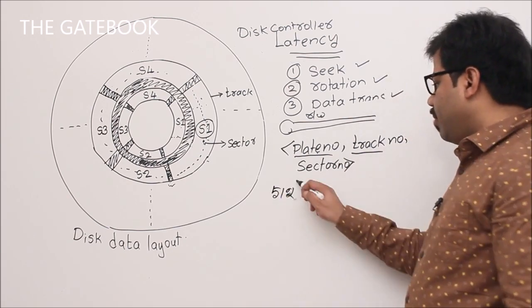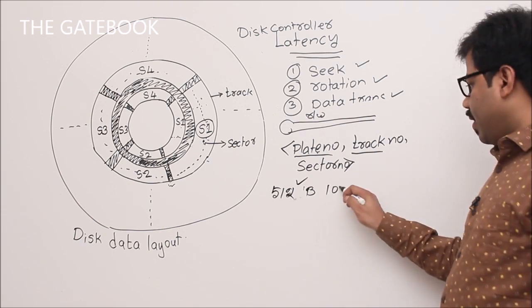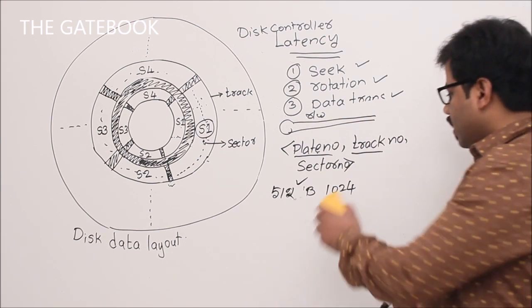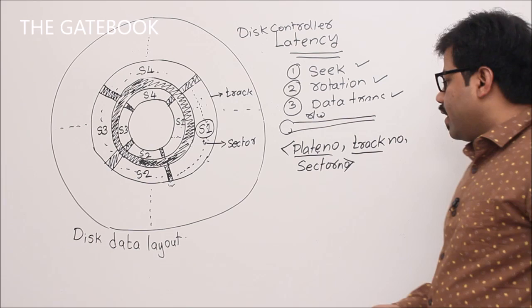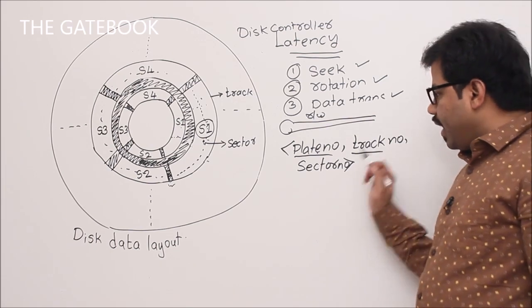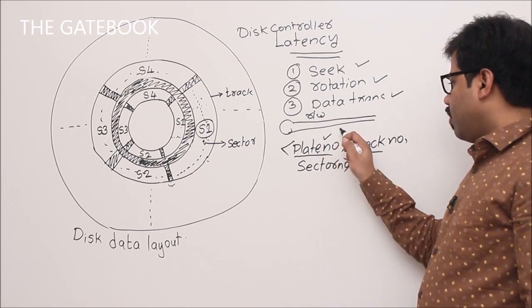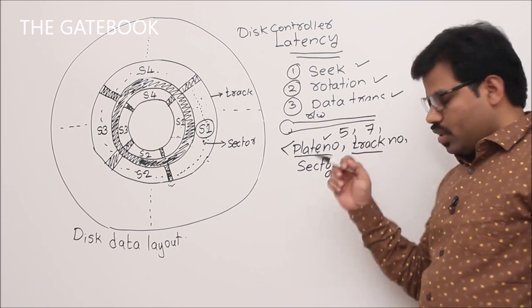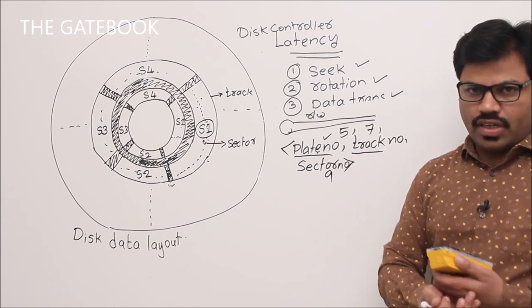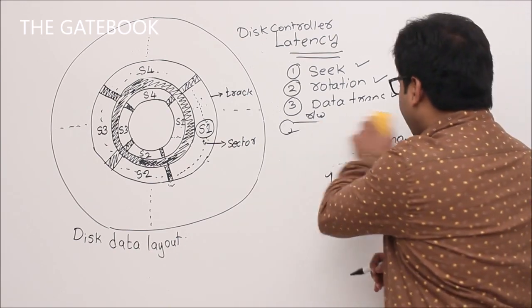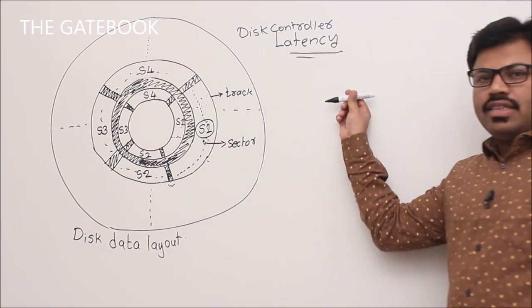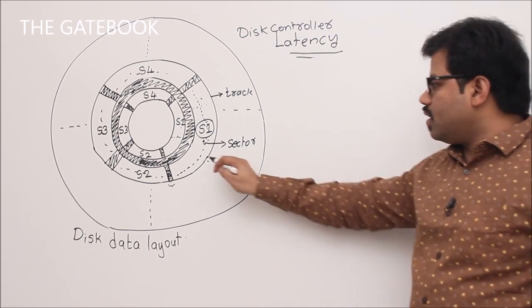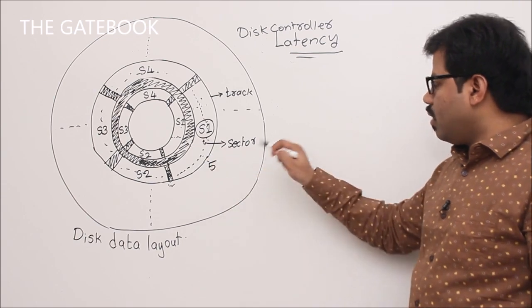Sector sizes are typically 512 bytes, though it may vary by machine — sometimes 1024 or 2048 bytes. For example, if you want to store data at plate 5, track 7, sector 9, the I/O head must be moved to the correct location.